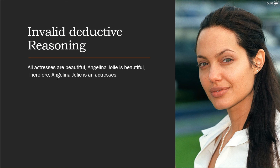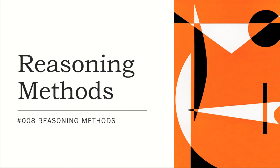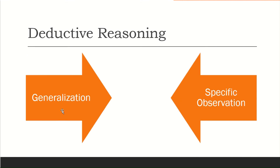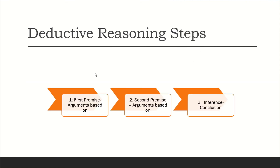This is deductive reasoning — how scientific methods work, what steps to follow, and how a general theory leads to a specific conclusion. It is a generalized concept moving into specific observation. It has three steps: premise one, on which the conclusion is based; premise two, the argument on which the conclusion is based; and when these two premises combine, they give you the conclusion and logical truth.